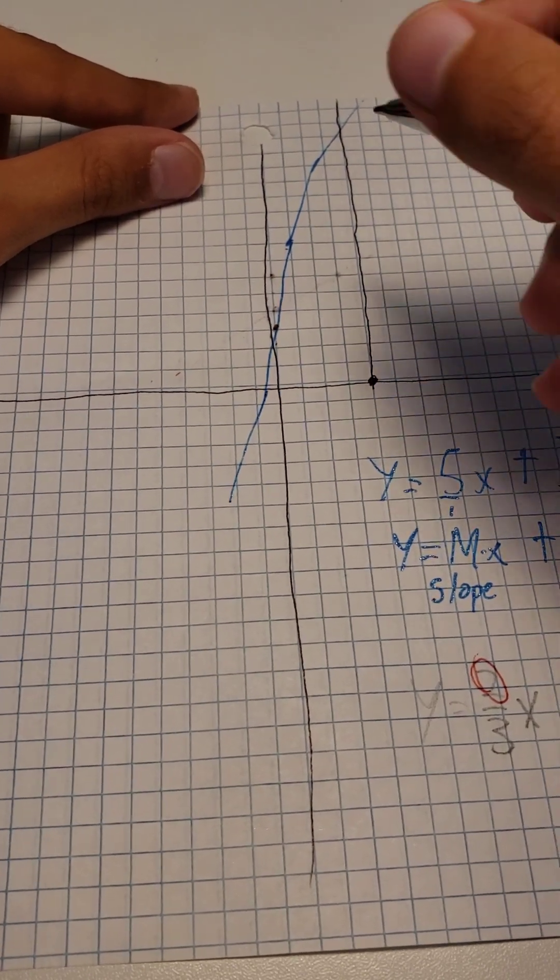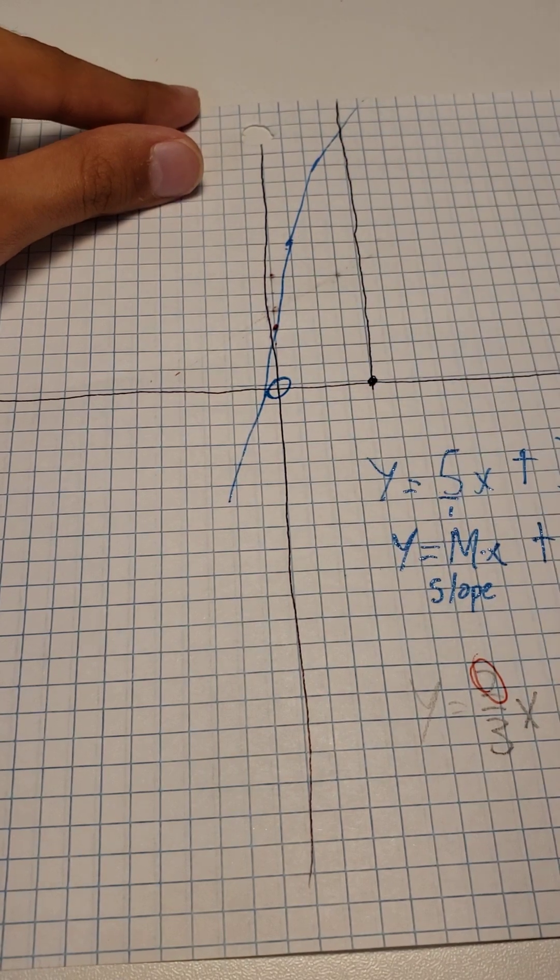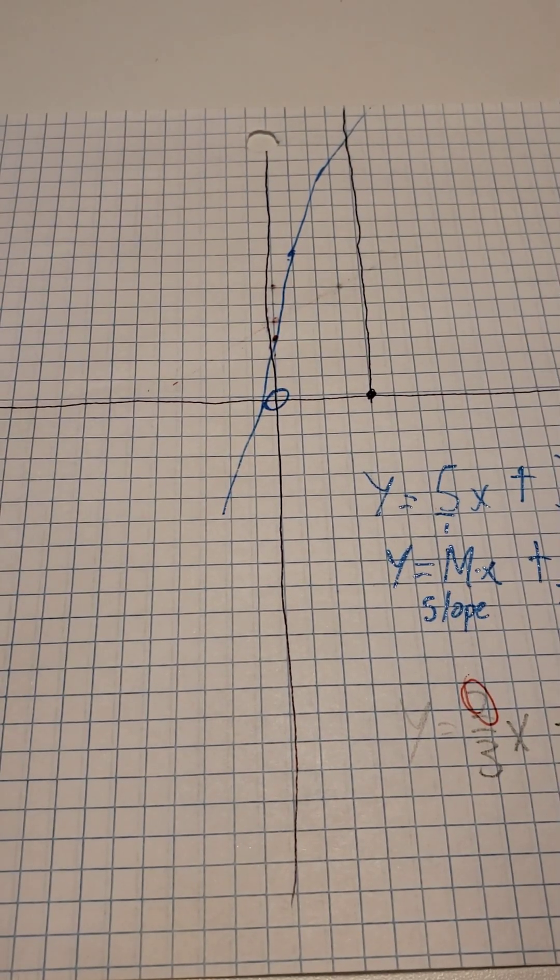You'll notice that the 0, 0 point, or the origin, is untouched by a line. This is important, and we will use this in a couple of minutes.